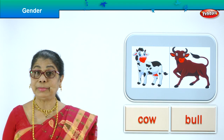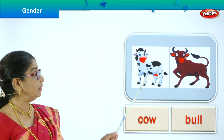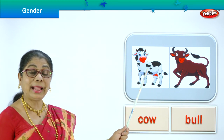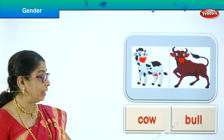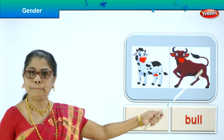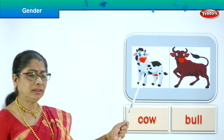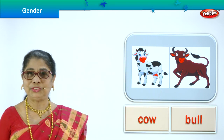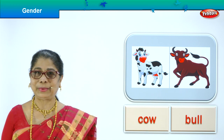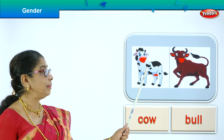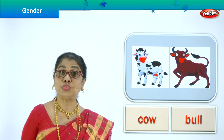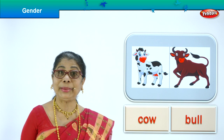Here you have animals. We have a cow and we have a bull. Cow is feminine gender, bull is masculine gender. Cow gives us milk. So we have feminine and masculine gender in animals too. Good, shall we look at another picture?